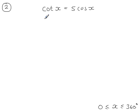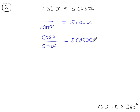Cot x is the same as 1 over tan x. And tan x is the same as sine over cos. So 1 over tan is cos over sine. And now I'm going to multiply both sides by sine x to get rid of the fraction.